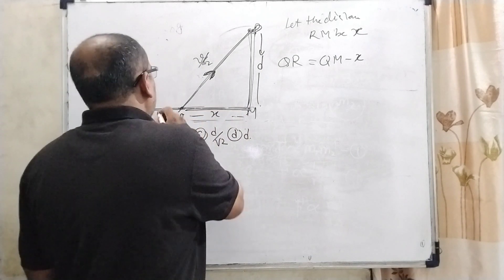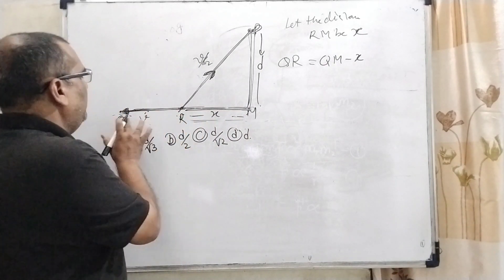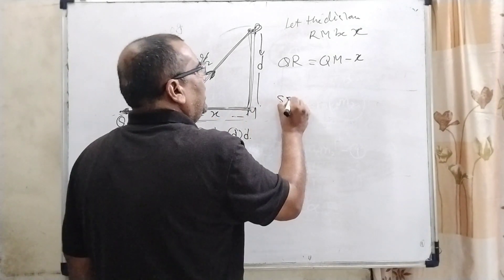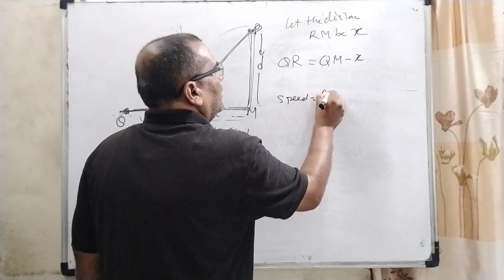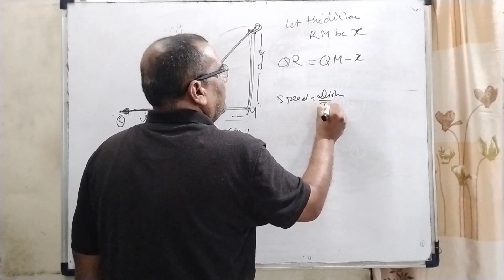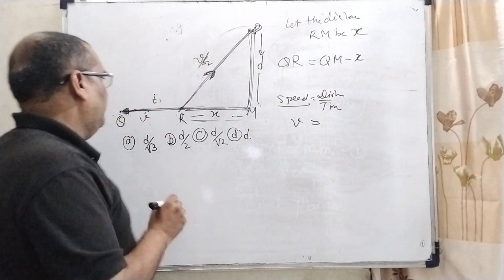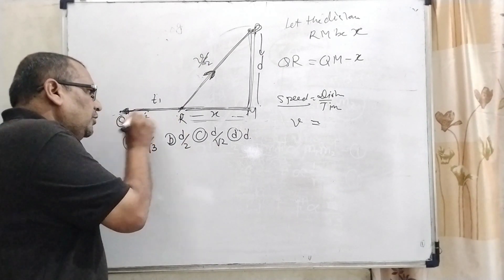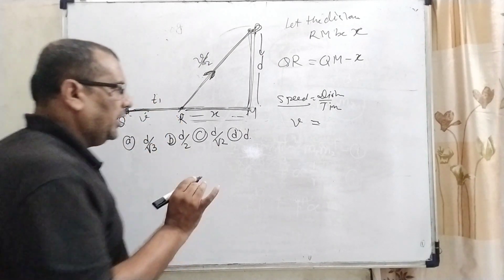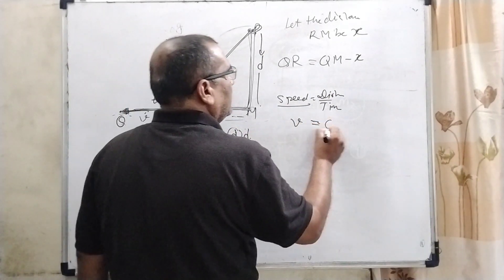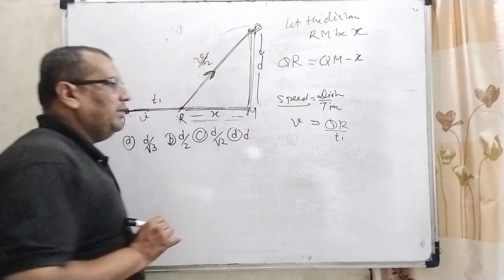Here, let us consider the time period traveling QR, that is T1. So speed equals distance upon time. Here speed is given as V for traveling from Q to R. And the distance is QR. And time, let us consider T1.